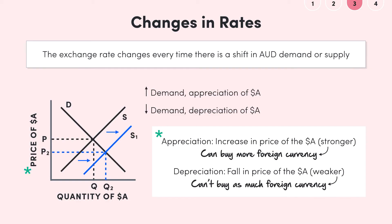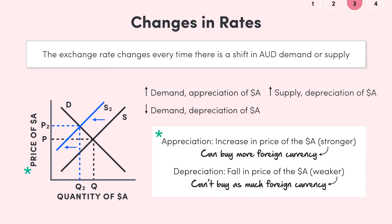On the supply side, an increase in Australian dollar supply causes the supply curve to shift to the right from S to S1. The price of Australian dollars falls from P to P2, meaning the dollar has depreciated. When the supply of Australian dollars falls, the supply curve shifts leftwards from S to S2, and the price of Australian dollars increases from P to P2, so the Aussie dollar has appreciated.